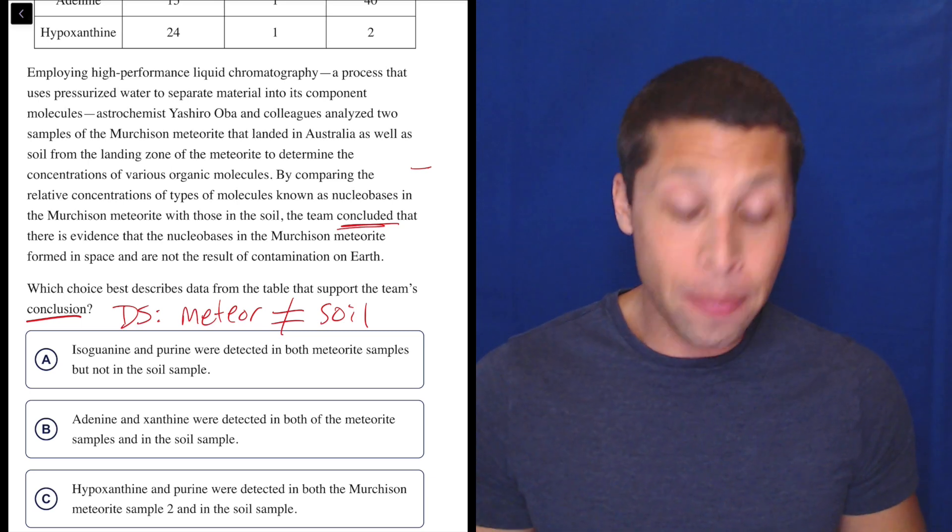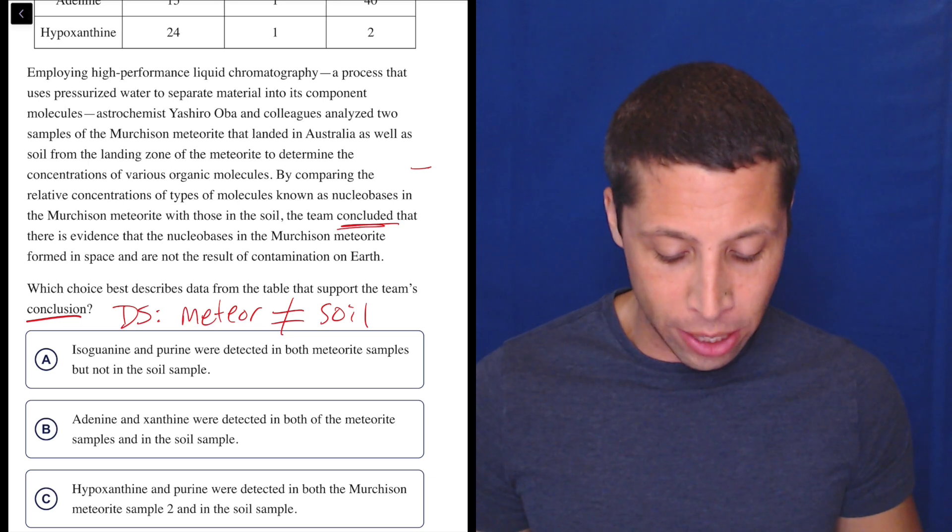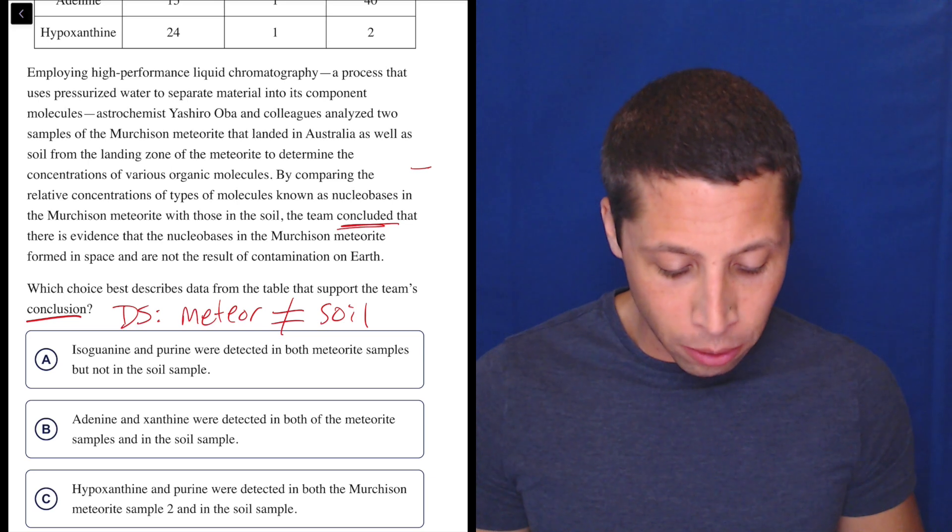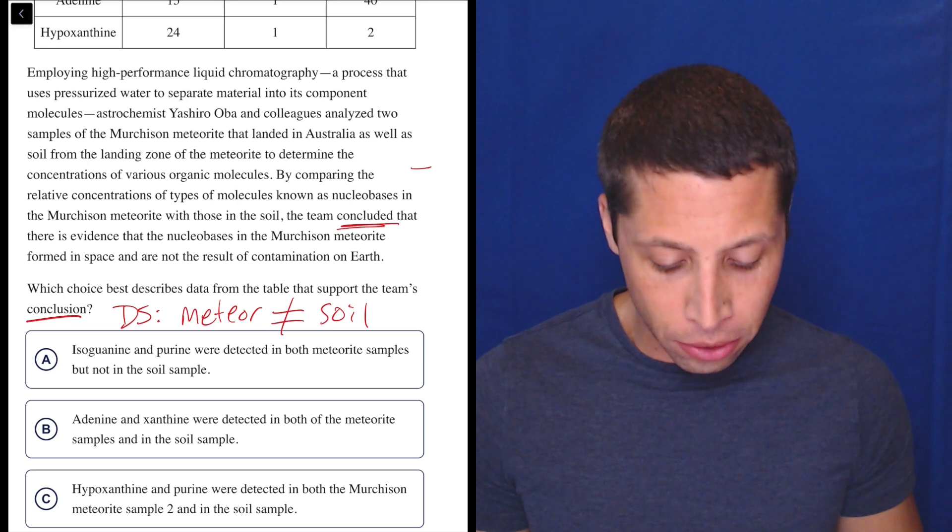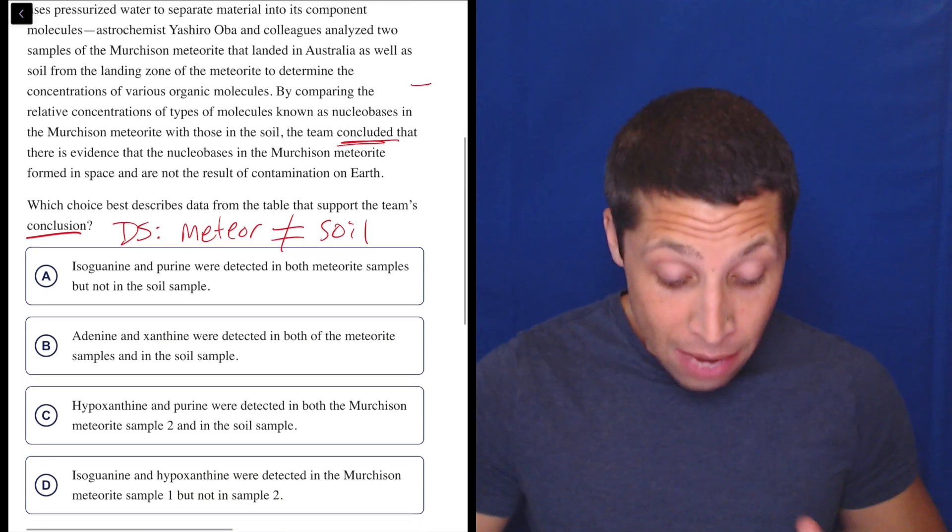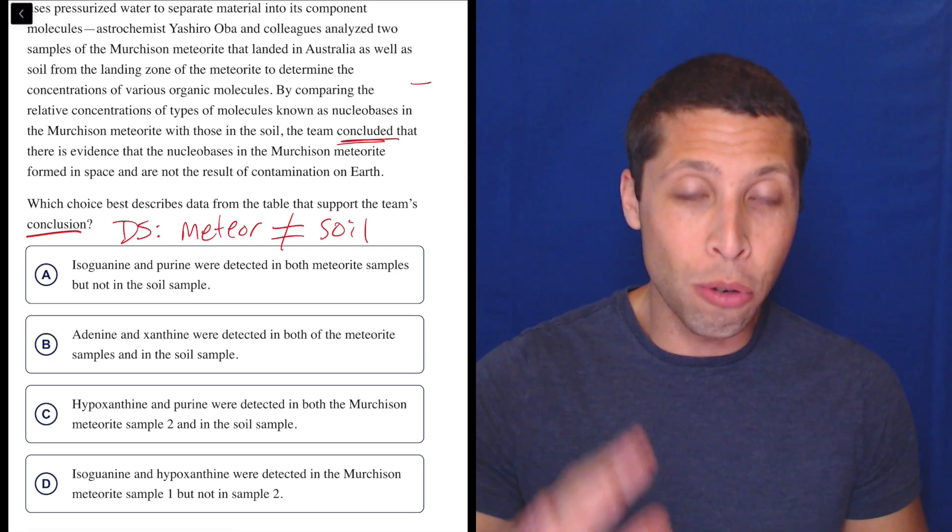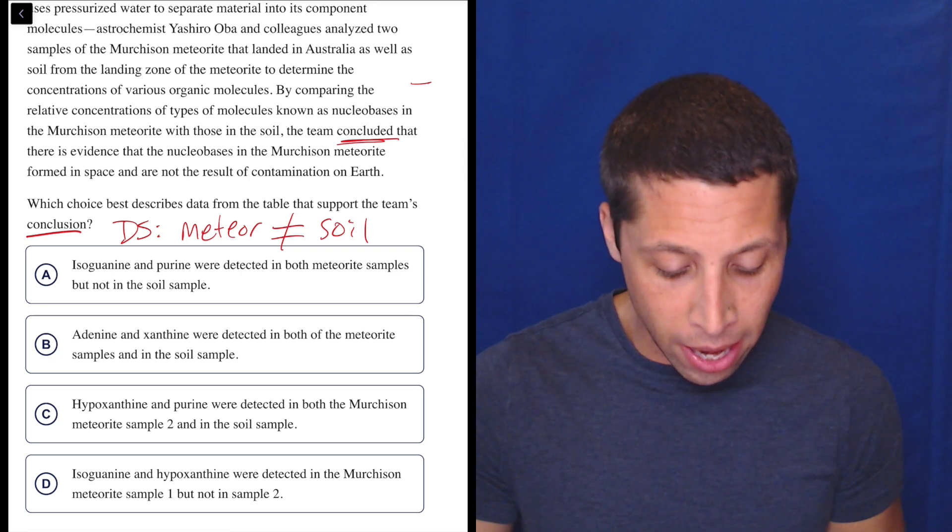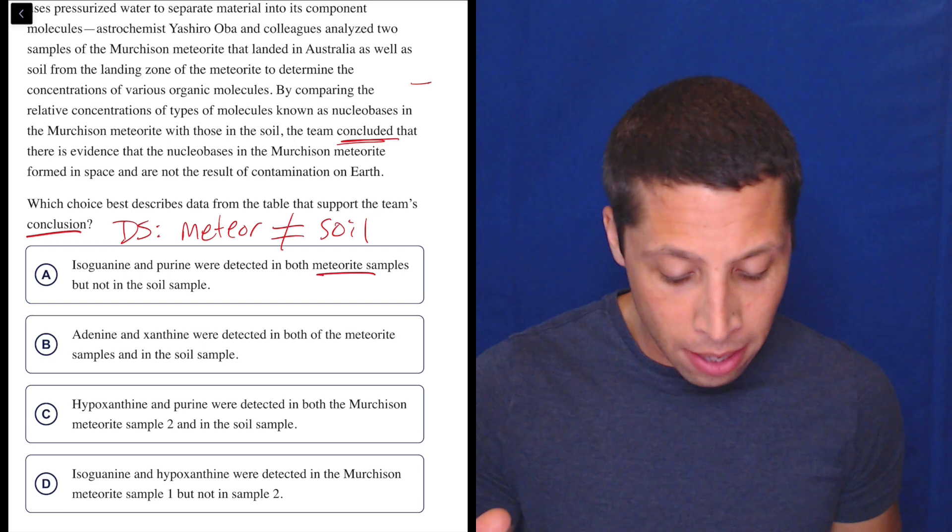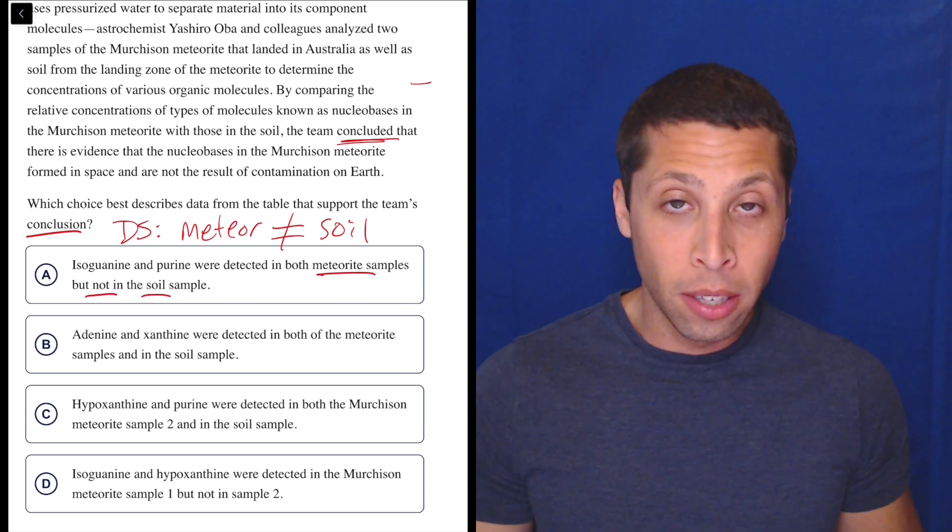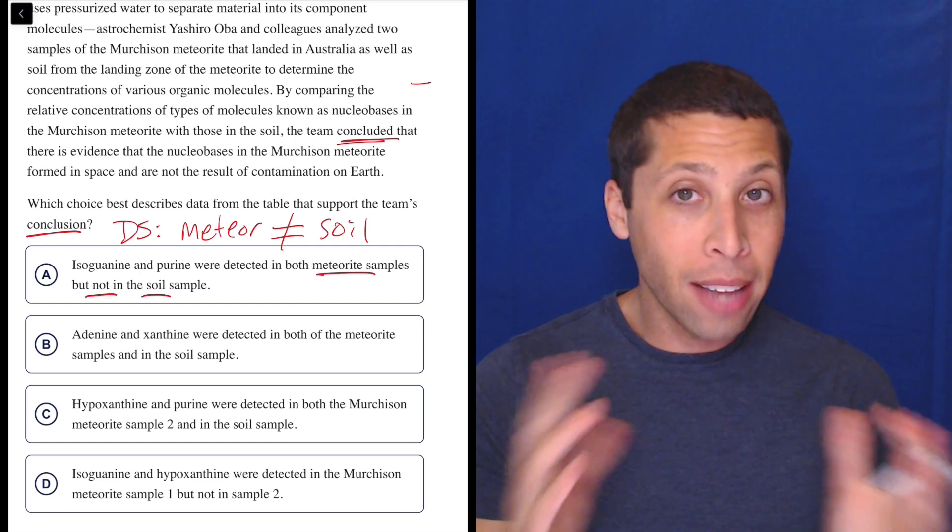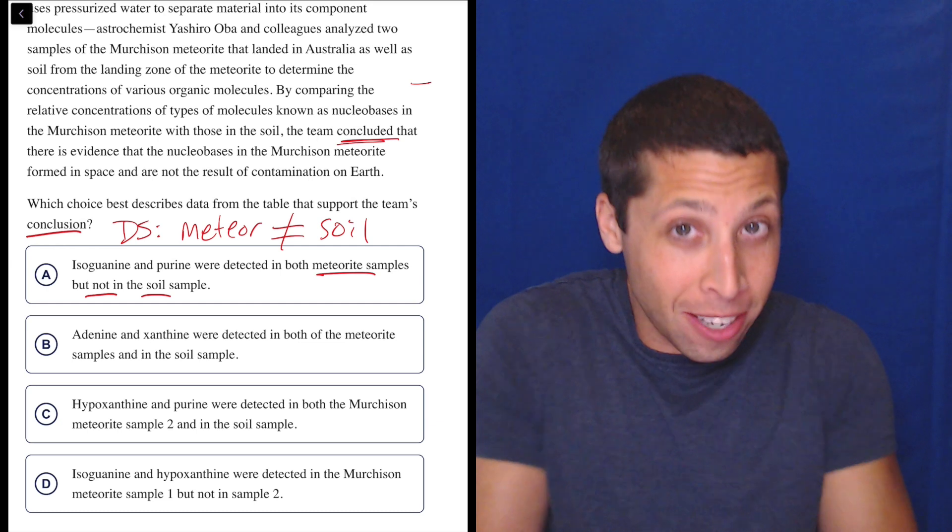So, A, isoguanine and purine were detected in both meteorite samples, but not in the soil sample. Even without looking at that chart, already this sounds good compared to my dumb summary. These things were in the meteorite, but not in the soil. So, okay, that sounds like the dumb summary. Now, is that true?